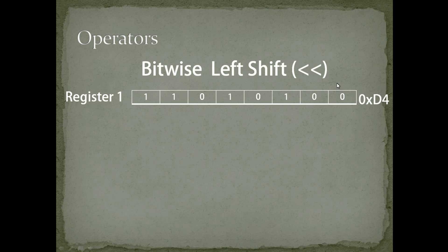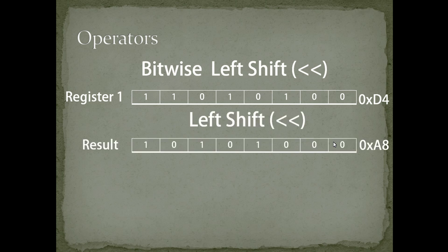For the left shift operator, the same value 0xD4 is in register 1. If I left shift this register value by 1, the bits move left: the bit at position 0 moves to position 1, position 1 moves to position 2, and so on. The bit at position 7 is discarded, and position 0 is filled with 0. The result is 0xA8.